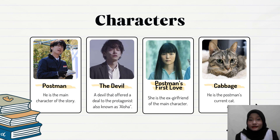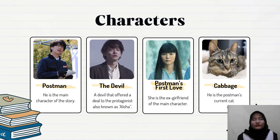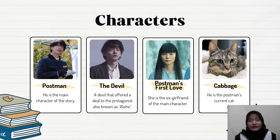Now we're going to talk about the characters of the novel. The first character is the postman, who is the main character. His name is not known because the author uses the first-person point of view, so we're going to call him the postman. The second character is the devil, who offered the postman a deal to live again. The devil's characteristics are actually the same as the postman — they look the same — and the difference between them is just their sense of passion.